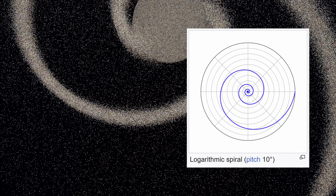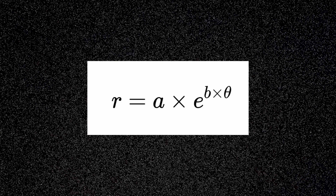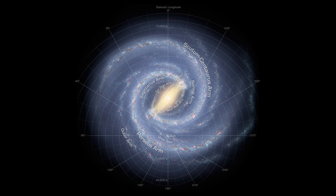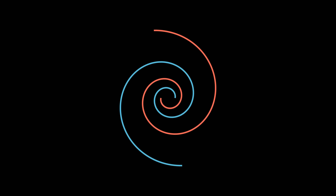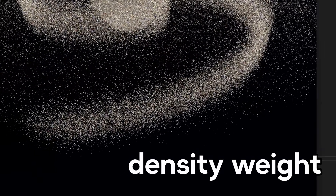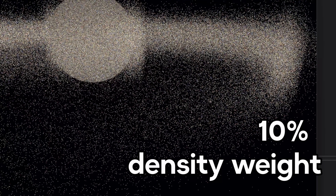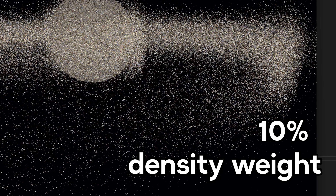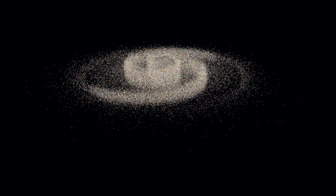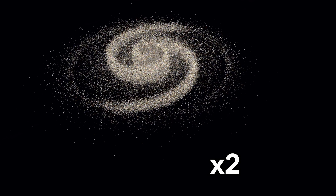The spiral arms use logarithmic spirals, following the equation R = A × e^(B × θ). For each star in the disk, I calculate its distance to the nearest spiral arm by solving the spiral equation in reverse. Since the Milky Way has two major arms, I check both arm positions spaced 180 degrees apart. Then I use exponential falloff to create the density weight. Stars very close to the spiral arms have a 10% higher probability of being placed, while stars in between the arms get rejected more often. To fix the unrealistic perfect circular edge, I extended the maximum radius by two times and created a 3-zone density system.